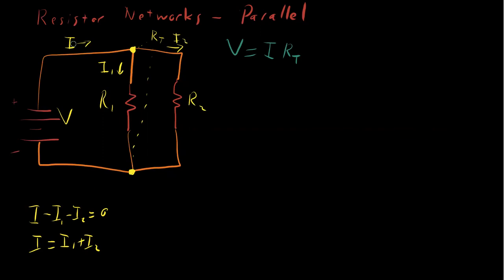We know that I, this I, big I, total I, is equal to V, is related to V and RT. So let's rewrite this I as V over RT. And let's set it equal to I1 plus I2. And all I did here is just take this guy on the other side and use that and plug it into this equation.